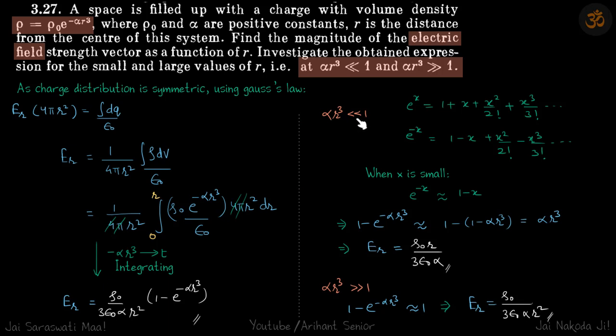For αr³ much less than one, we use the Taylor expansion of e to the power x. When it's e to the power minus x, we use this expansion. When x is small, we neglect the higher orders and e raised to minus x can be approximated as 1 minus x.